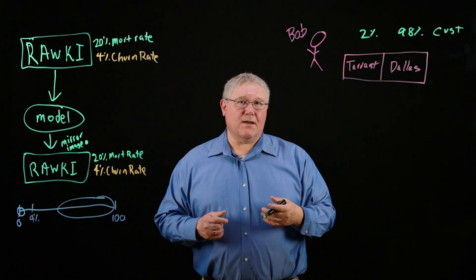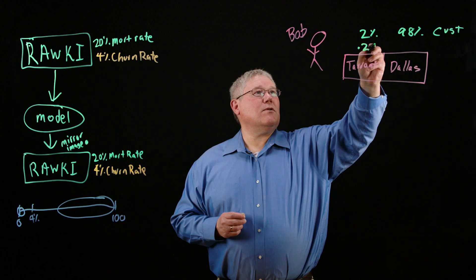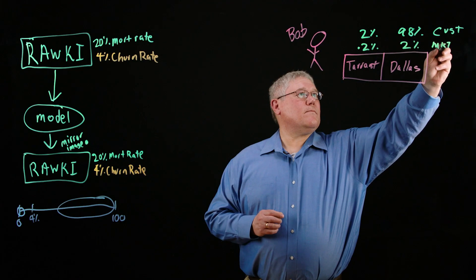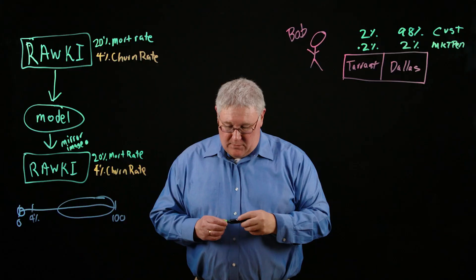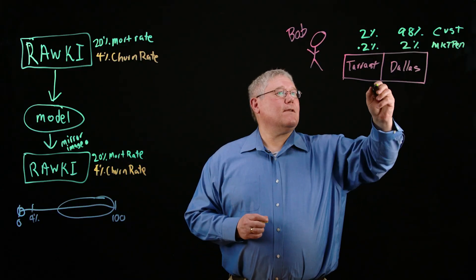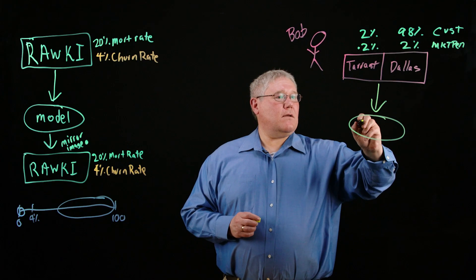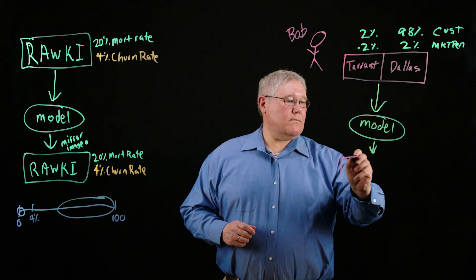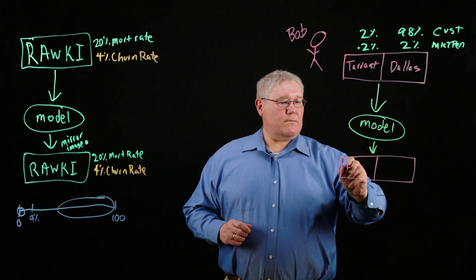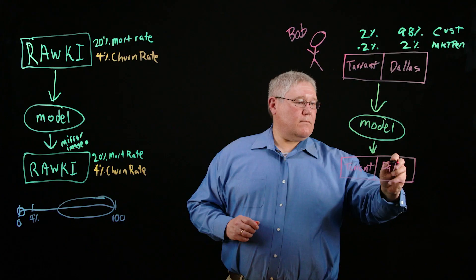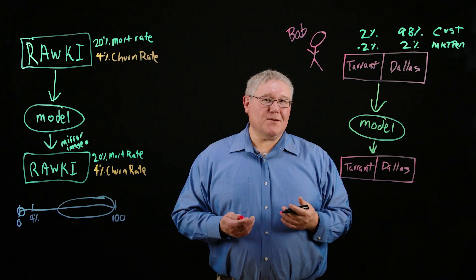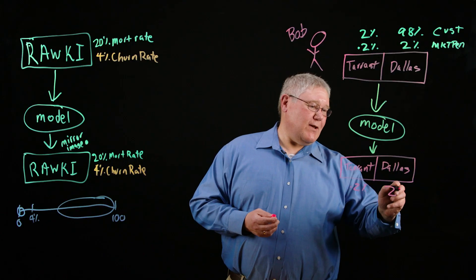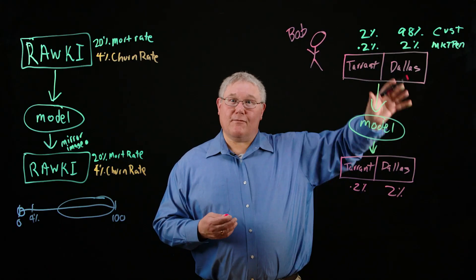His market penetration — which is the number of customers divided by the number of households in the county — for Tarrant County is about 0.2%, pretty low. And in Dallas County, it's about 2%. So if Bob builds a model over this reality as we know it, his mirrored reality will also have a market penetration rate of 0.2% for Tarrant County and 2% for Dallas County, because all the model's doing is creating a mirror image of reality as we know it.